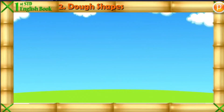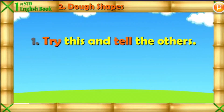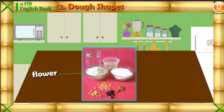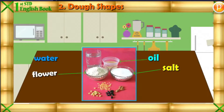Two shapes. Try this and tell the others. What you need? Flour, one cup. Salt, one cup. Oil, four teaspoons. Water. Seeds are used for decoration.